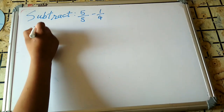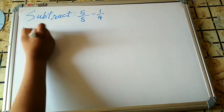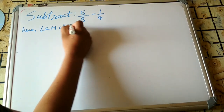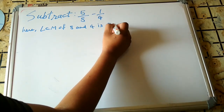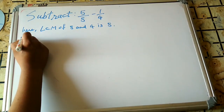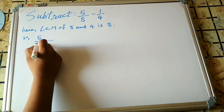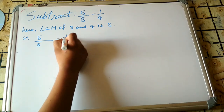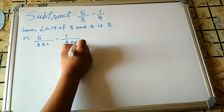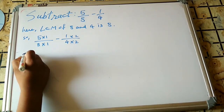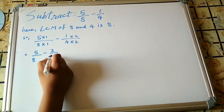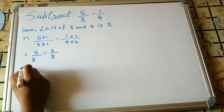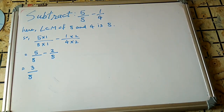Now let us talk about subtraction: 5/8 − 1/4. These are unlike fractions. The LCM of 8 and 4 is 8, so we rewrite: 5/8 minus 2/8. The answer is 3/8.